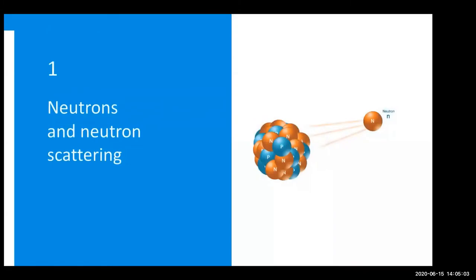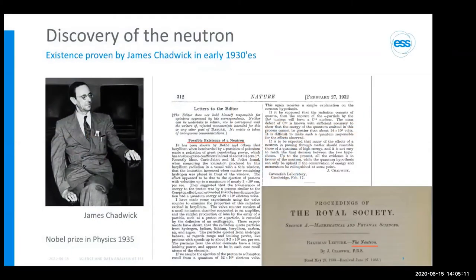Neutrons, as you probably know, are something you can find in a nucleus. The neutron was first discovered in the early 1930s by James Chadwick, who proved its existence. He first announced that neutrons possibly existed in a letter to Nature in 1932.